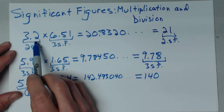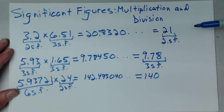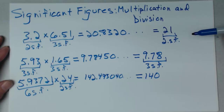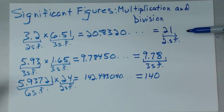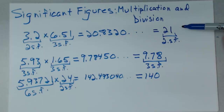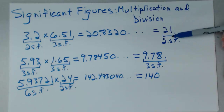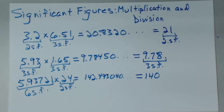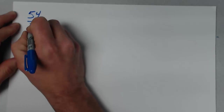You only had two significant figures in 24. So to be honest and precise — as precise as you can be given the significant figures you actually have — you have to write the correct number of significant figures. Let's look at a couple of division problems, starting with a fairly simple one.